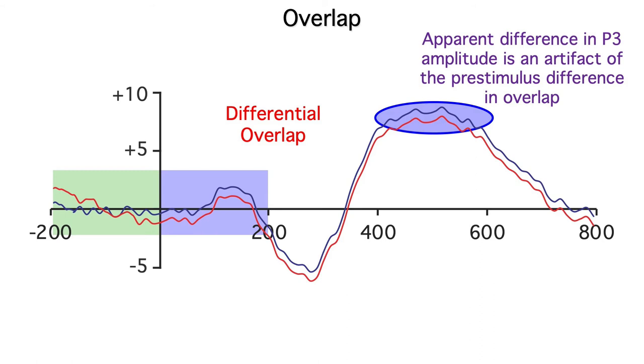The bottom line is that, when you're reading ERP papers, you need to scour the methods carefully to make sure that the overlap doesn't differ across conditions. If the stimuli are presented in random order, and the conditions vary randomly within each block of trials, you're usually okay. But be careful if the experimental conditions aren't randomized, or if there's a manipulation of the time between trials.